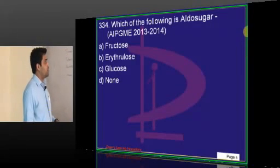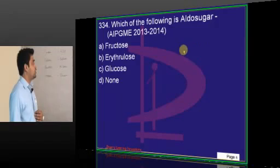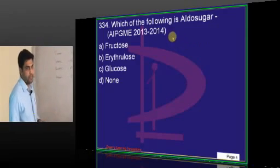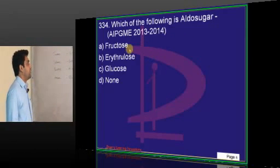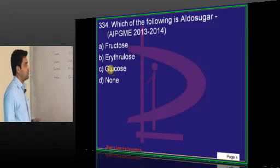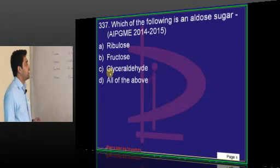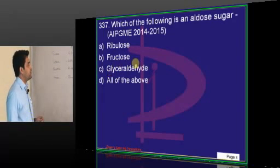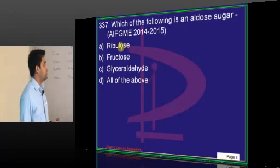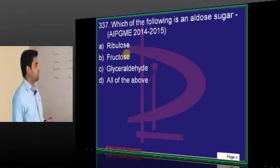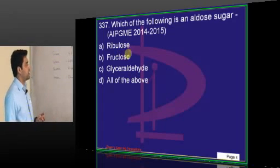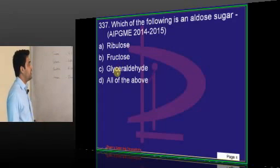Which of the following is an aldo-sugar? Fructose, erythrulose, glucose — the answer is glucose. Ribulose and fructose are both keto-sugars. Glyceraldehyde is also an aldo-sugar.